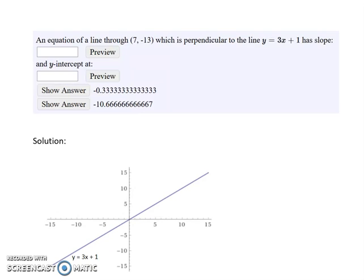In this example, we are learning how to find the slope and y-intercept of a line that passes through the point (7, -13) and is perpendicular to the line y = 3x + 1.